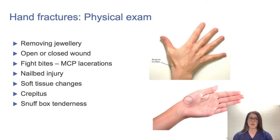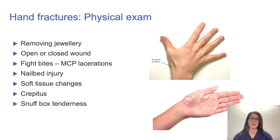The physical exam should start with removing jewelry, as swelling can make removal difficult later. Assess whether the wound is open or closed and look for associated injuries—such as a fight bite, which is a laceration over the fifth MCP—and nail bed injuries requiring repair. Evaluate soft tissue changes including swelling, deformity, discoloration, and bony projections. Feel for crepitus, which can indicate an underlying fracture, and assess for snuff box tenderness, which is an important finding in scaphoid fractures.